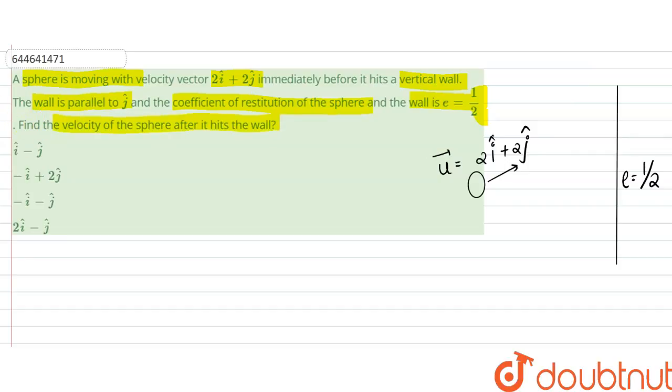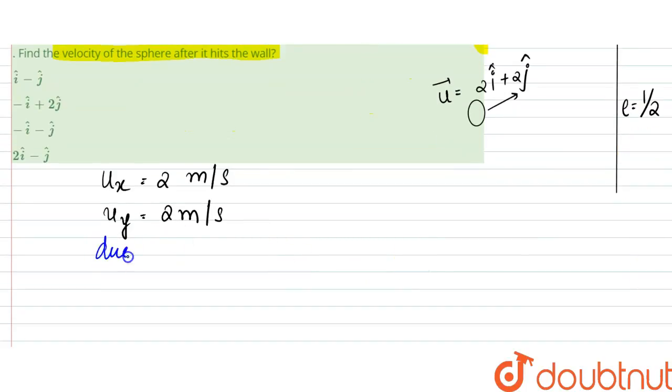So according to this, what we can say is u_x is 2 meters per second, and u_y is also 2 meters per second. Since the only velocity that would change is in x direction due to coefficient of restitution, due to e, there would be change in x direction.